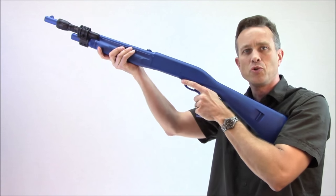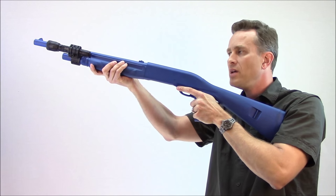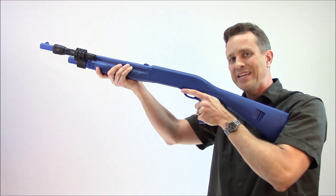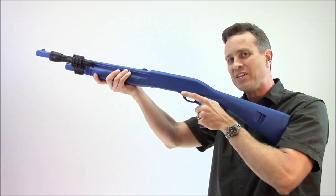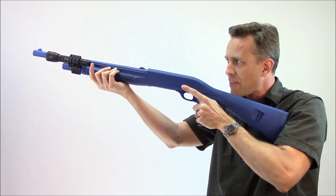lots of times you need to shoot with your support side. So, that flashlight position needs to be in a location that when you're shooting support side, you can still easily activate that flashlight.